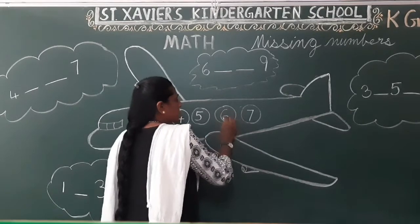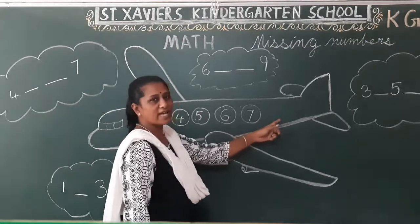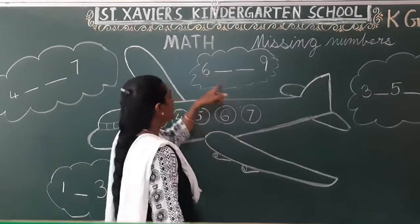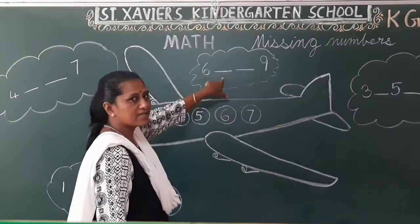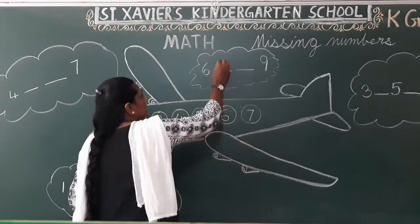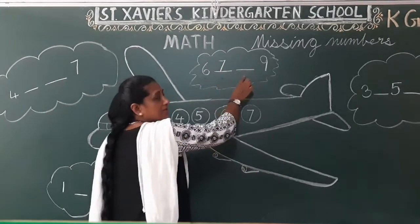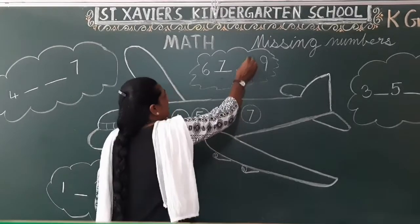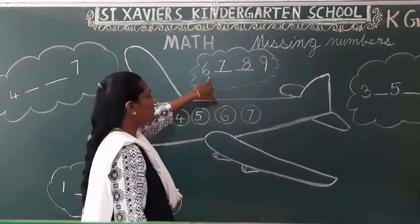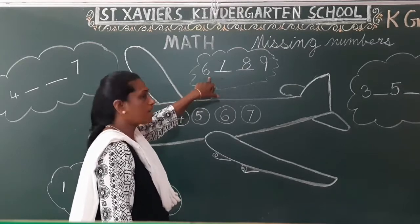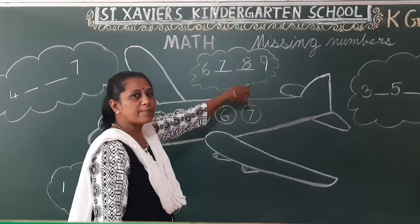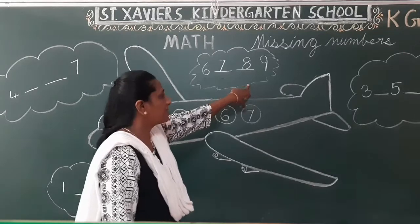Seven — seven. What comes after six? Seven. What comes after seven? Eight. So, you need to look at your number. What is Madam teaching you? Missing numbers. Very good.